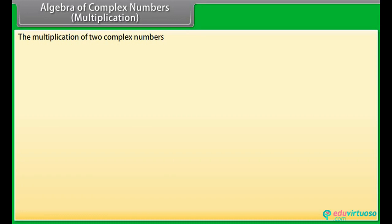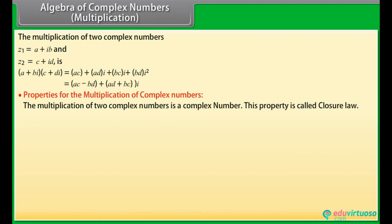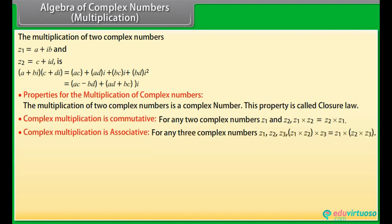Algebra of complex numbers — Multiplication. The multiplication of two complex numbers Z1 and Z2 is AC minus BD plus (AD plus BC) iota. Properties for the multiplication of complex numbers: the product of two complex numbers is a complex number — this is the closure law. Complex multiplication is commutative: for any two complex numbers Z1 and Z2, Z1 times Z2 equals Z2 times Z1. Complex multiplication is associative: for any three complex numbers Z1, Z2, Z3, (Z1 times Z2) times Z3 equals Z1 times (Z2 times Z3).